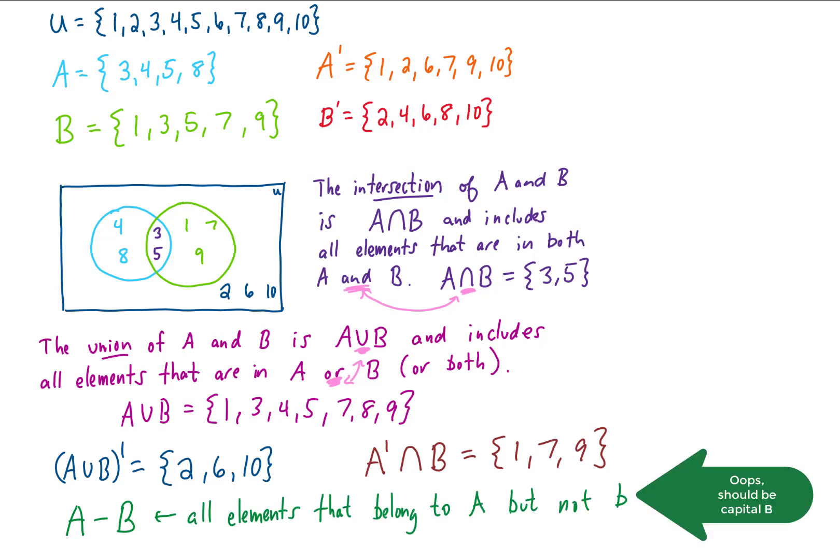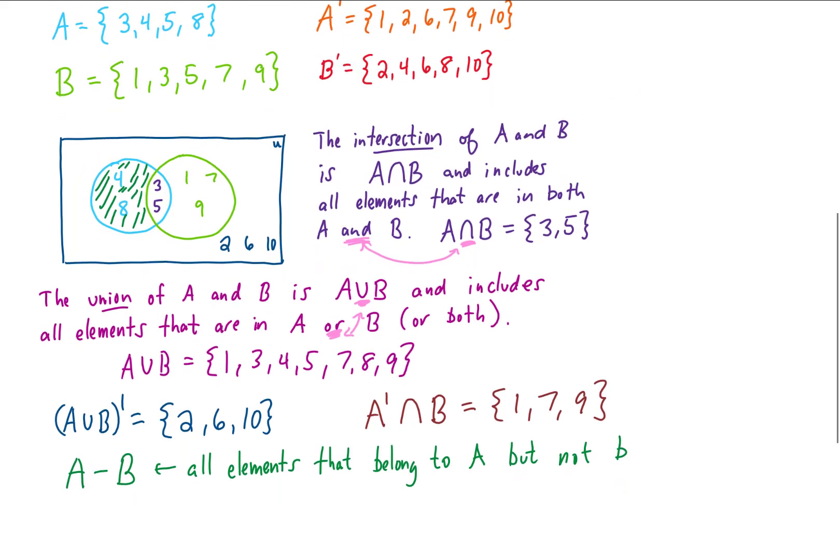This would be the set of all elements that belong to A but don't belong to B. Well we could do this problem just by looking at sets A and B, or we could look at the Venn diagram. It's easier for me to visualize this by looking at the Venn diagram. All of the elements that belong to A but don't belong to B are included in this piece of the Venn diagram right here. Those are the elements 4 and 8. So our set A minus B is the set 4, 8.